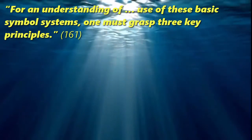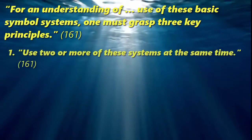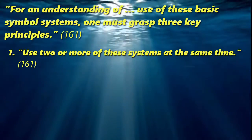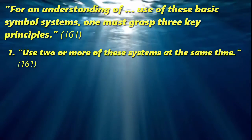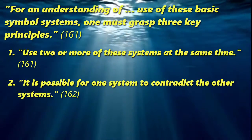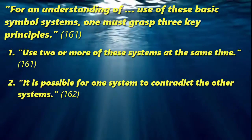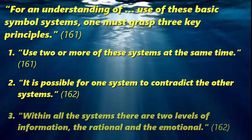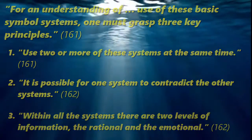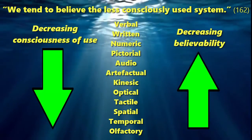For an understanding of the use of these basic symbol systems, one must grasp three key principles. One: use two or more of these systems at the same time — doing so strengthens the credibility of a message and enhances recall. Two: it is possible for one system to contradict the other systems; this happens often in cross-cultural communication. Three: within all the systems there are two levels of information — the rational and the emotional. We tend to believe the less consciously used system.